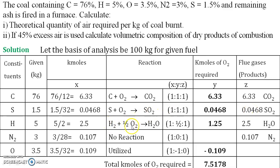For hydrogen the case is different. One molecule of hydrogen requires only half a molecule of oxygen but produces one molecule of water. The mole ratio is 1:0.5:1. So 2.5 kmol of hydrogen requires 2.5 × 0.5 = 1.25 kmol of oxygen, and produces 2.5 kmol of water.